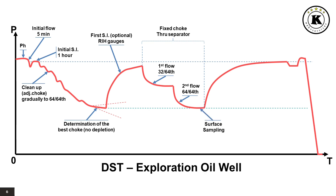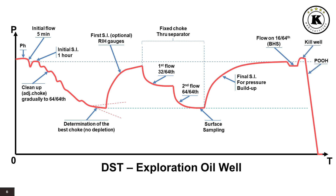Taking sets of representative surface samples at the end of the main flowing period. Closed the well for a final shut-in period to record pressure buildup. Opened the well for flow on 16 over 64th to take representative bottom-hole reservoir samples. Killed the well. Pull out of hole DST tools. Downhole pressure gauge recorders at surface.